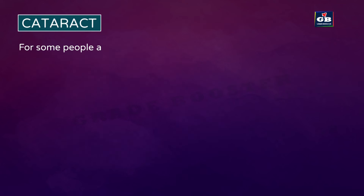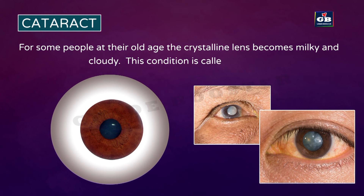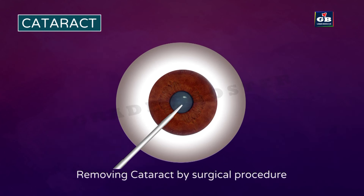Cataract: for some people at old age, the crystalline lens becomes milky and cloudy — this condition is called cataract. It causes partial or complete loss of vision. This can be corrected by cataract surgery, where the milky and cloudy parts of the eye lens are removed.